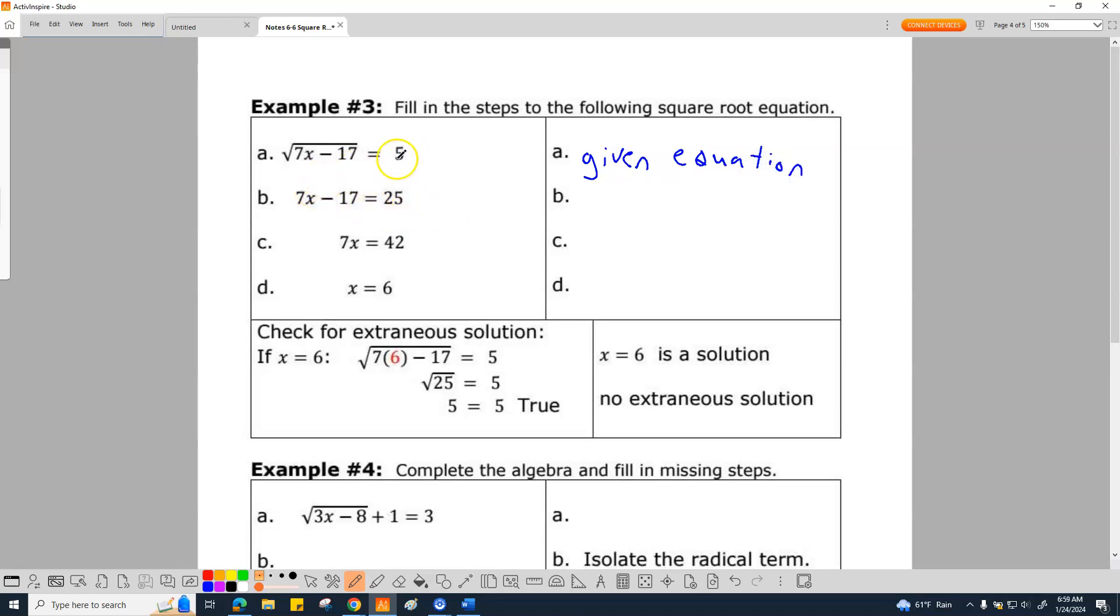Now, check out what happened. This five somehow magically turned into 25, and this square root disappeared in quotations. Well, what do you think that means? I think that means we probably squared both sides. Let's see if that's true. This squared, uh-huh. Five squared, uh-huh. So for B, what did we do? We squared both sides. And I'm going to leave it in red so y'all can kind of see it. Squared both sides.